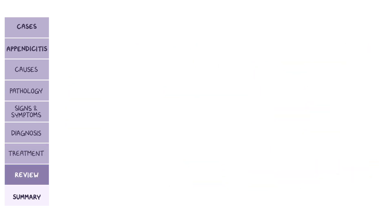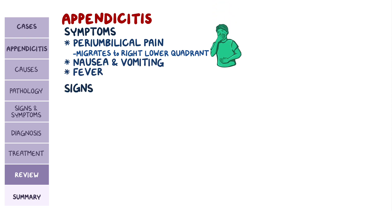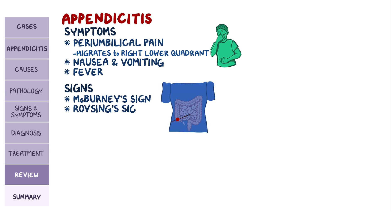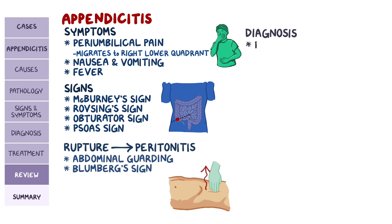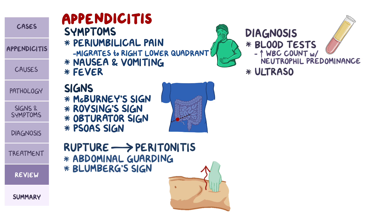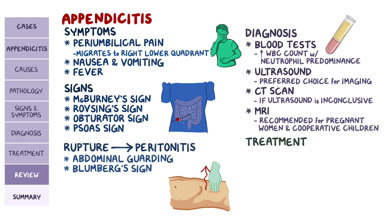Alright, so let's review. Appendicitis initially causes peri-umbilical abdominal pain that later migrates to the right lower quadrant, nausea, vomiting, and fever. Classic signs include McBurney sign, Rovsing sign, the obturator sign, and the psoas sign. If the appendix ruptures, it can cause peritonitis, which can cause abdominal guarding and Blumberg sign. Diagnosis includes blood tests showing elevated white blood cell count with neutrophil predominance. Ultrasound is the preferred choice for imaging, while a CT scan is done as a follow-up if the ultrasound is inconclusive. MRI is recommended over CT scan in pregnant women and children who can cooperate. Treatment usually consists of appendectomy.